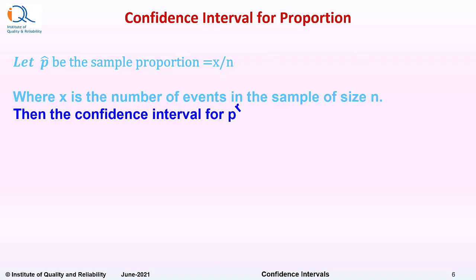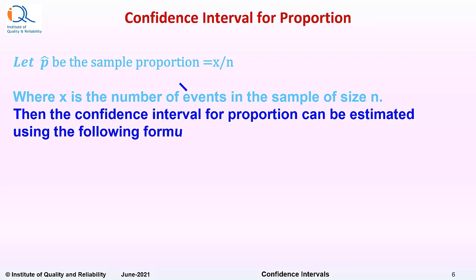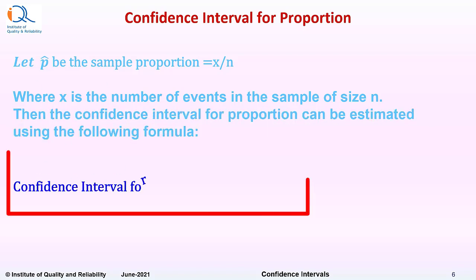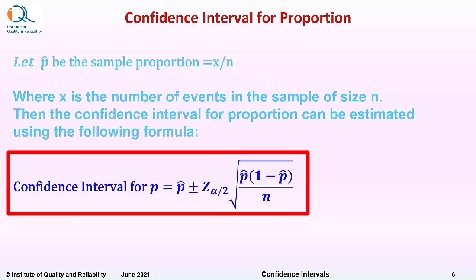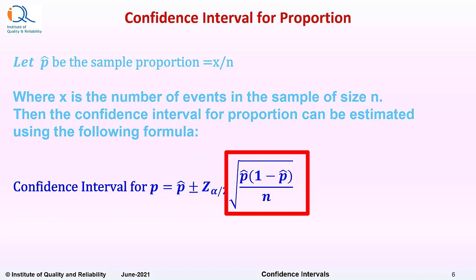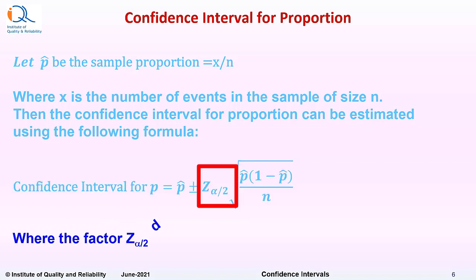Then the confidence interval for proportion can be estimated using the following formula: confidence interval equals p cap plus or minus z alpha by 2, which comes from the standard normal distribution, into square root of p cap into 1 minus p cap upon n. This term square root of p cap into 1 minus p cap upon n comes from binomial distribution, where the factor z alpha by 2 depends upon the confidence level.